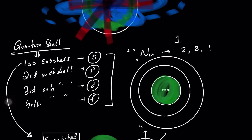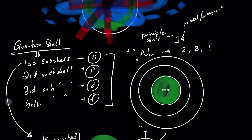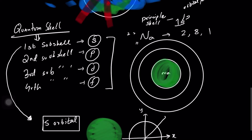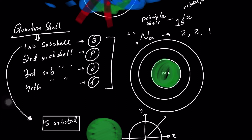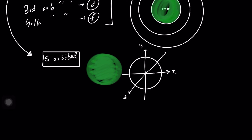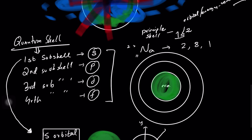The 1 means this is the first principal shell. Then we write S for the orbital, also called an energy level because electrons contain energy. The S orbital can only hold up to two electrons. What we've discovered is that each orbital can only hold up to two electrons — not more than that.